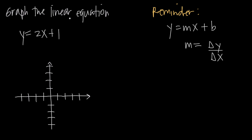Let's talk for a second about what a linear equation actually is. We know it's an equation when there's an equal sign involved, and in this particular problem we do have an equal sign: y equals 2x plus 1. We know it's a linear equation because linear means that both variables involved, y and x, are linear — meaning they're raised to the first power, or the exponent is 1. So this is y to the first power and x to the first power. We just don't write that because it's redundant. So this is a linear equation because both of our variables are linear.